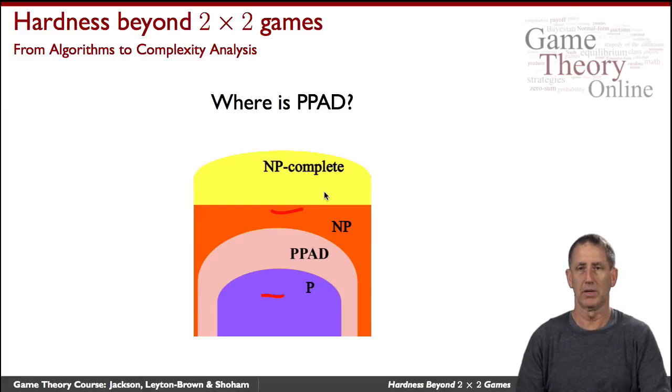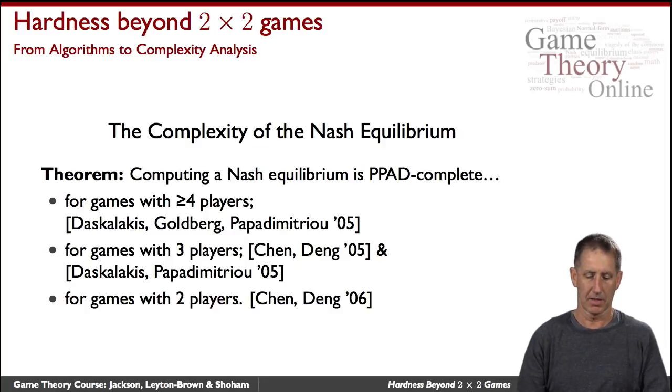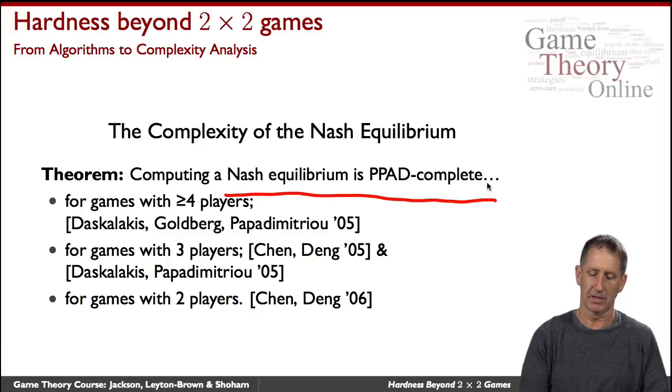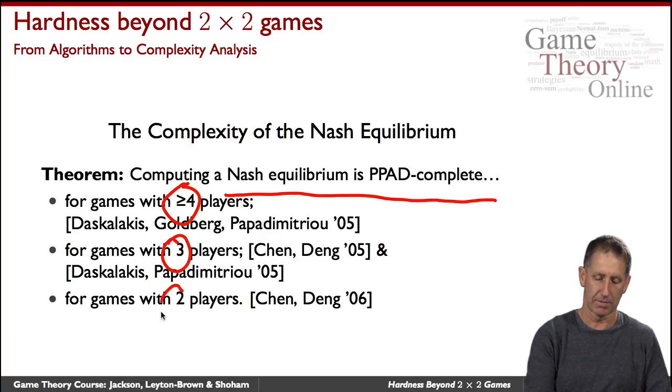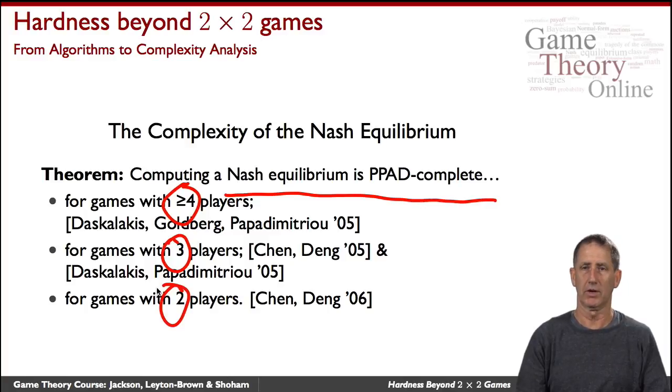What does that have to do with the problem of computing a Nash equilibrium? Well, that's where the following theorems come in. Originally it was shown that the problem of computing a Nash equilibrium is complete for this class PPAD. That is, it's the hardest among all problems in that class. Initially proved for four players, then for games with three or more players, and then finally in 2006 for all classes of games. And so we widely believe that the problem is not polynomial, cannot prove it, but we do know where it resides within the complexity hierarchy that we are familiar with.